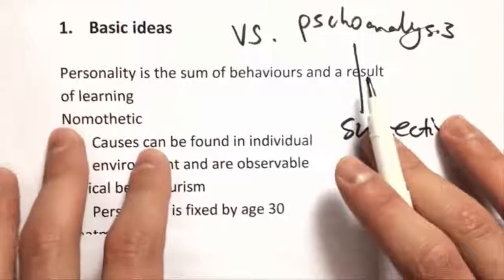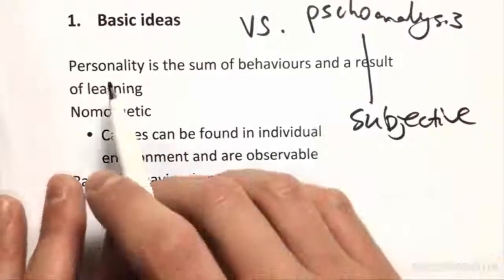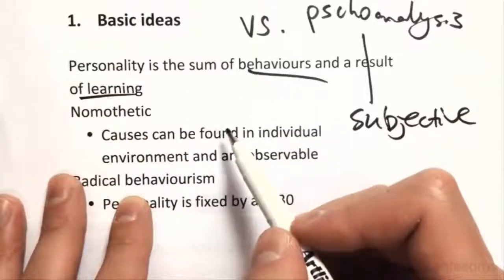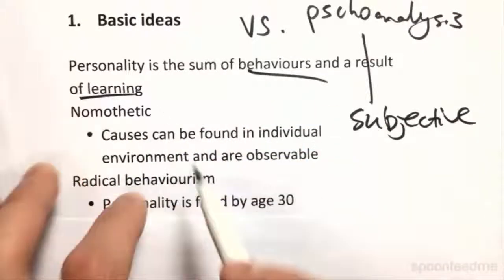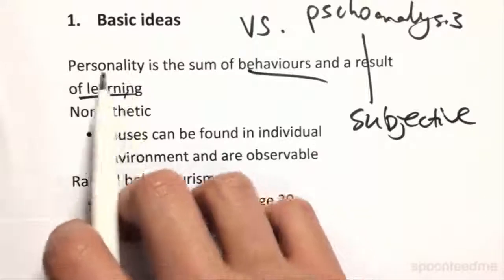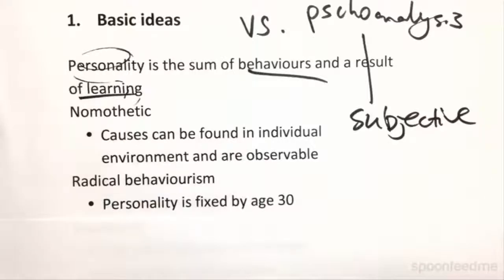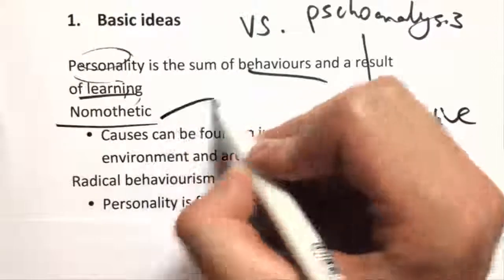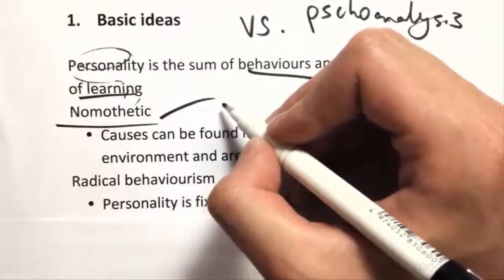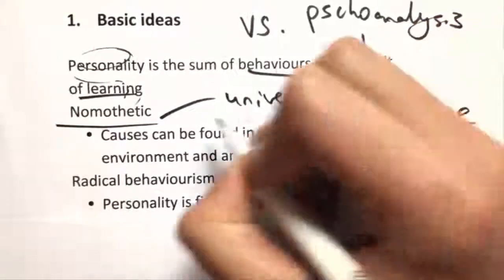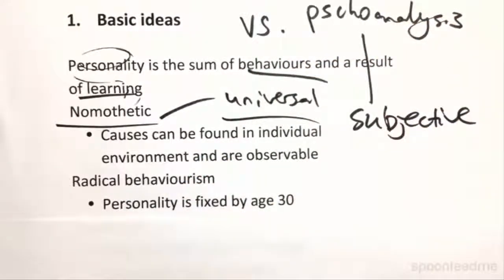With Cognitive Behaviour Theory, personality comes down to behaviours and learning. They basically say there isn't really even personality — it's just learning, us getting stimulus and response. Personality-wise, it's nomothetic, meaning it's universal and true of all people, which in that sense makes it similar to psychodynamic theory.